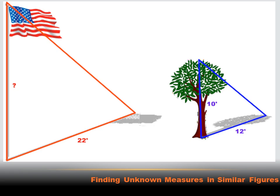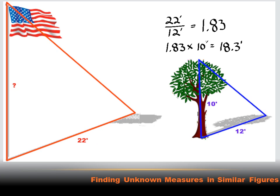Now, could we figure out what the height of the flagpole is? We could. We could say that the shadow of the flagpole divided by the shadow of the tree — 22 feet divided by 12 feet — gives us the ratio of growth of the base of the triangle. In other words, 1.83 times 12 feet equals 22 feet. If we know that the base is growing by a rate of 1.83 between the tree and the flagpole, the height is going to grow by the same amount. So 1.83 times 10 feet gives us 18.3 feet as the height of the flagpole.